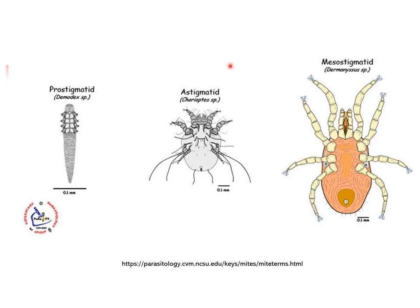For the astigmatized mites, particularly the Sarcoptes species, the body is considered to be round to sub-ovate, and there is much space between the third and the second legs. Collection can be done with skin scraping. For the mesostigmata mite, particularly the Dermanyssus species, the body shape is oval, there is little space between the second and the third leg, and collection can be done through tape preparation.